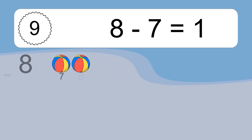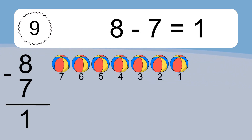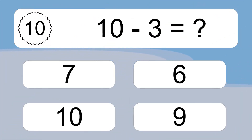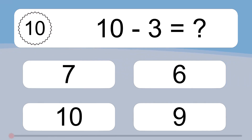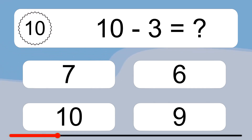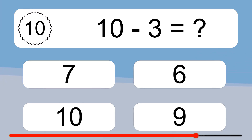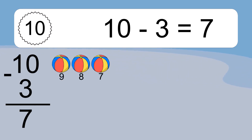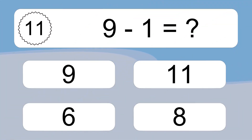8 minus 7 equals what? 8 minus 7 equals 1. Let's count it: 7, 6, 5, 4, 3, 2, 1. 10 minus 3 equals what? 10 minus 3 equals 7. Let's count it: 9, 8, 7.